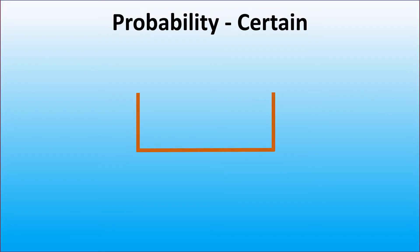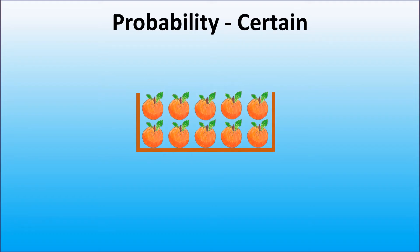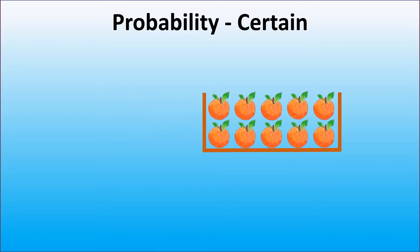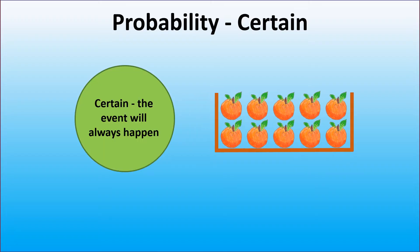If we have only oranges in the box, how would we describe the chance of picking an orange from the box? As we have only oranges in the box, we will pick an orange every time we pick a fruit from this box. Thus, the probability of picking an orange in this situation is certain.